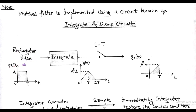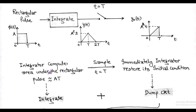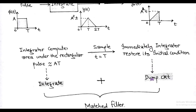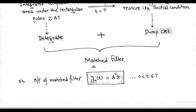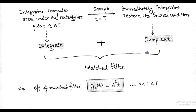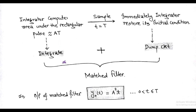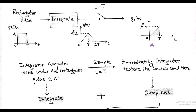The input is a rectangular pulse φ(t), and after integration we get y(t) as shown in the figure. The integrator computes the area under the rectangular pulse, which is A·T. After sampling at t equals capital T, the integrator immediately resets to its initial condition — this reset over the interval zero to capital T is why it is called a dump circuit. Therefore, the matched filter can be simply implemented using an integrate-and-dump circuit, with output y(t) = a²t for zero less than t less than or equal to capital T.